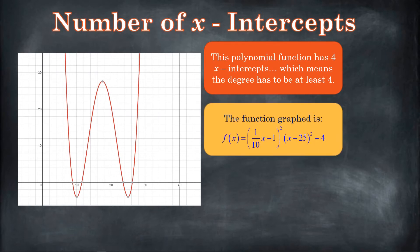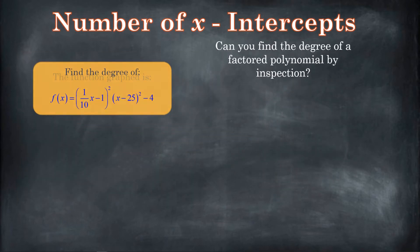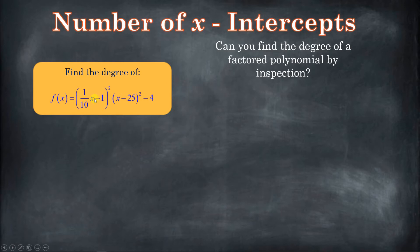It turns out this function is one-tenth times the quantity x minus one squared times x minus 25 squared minus four. What if you were given this function without the graph and asked to find its degree? Could you do it? It's not in standard form — so it's not simply degree two. If you multiply all of this out, you're going to get something more than two. And if you're only asked for the degree, it's going to take you a long time to multiply this out and you might mess it up. So let's see if we can figure it out just by inspection.